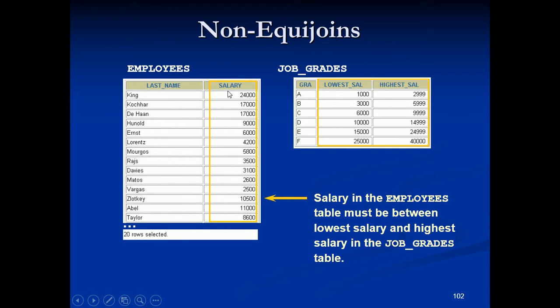The condition which we are going to use is the salary should come in between the lowest salary which is there in the job grades table and the highest salary in the job grades table. So we will see an example how we are going to do this.